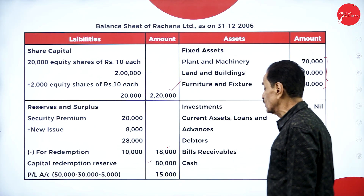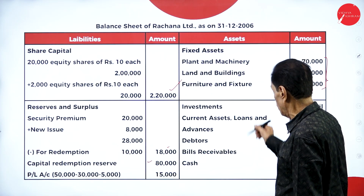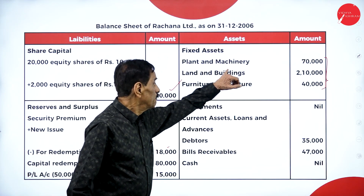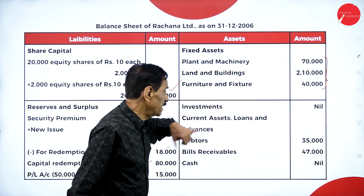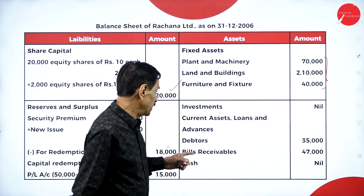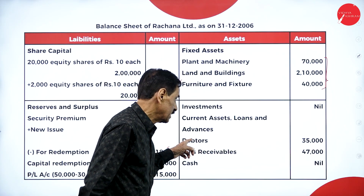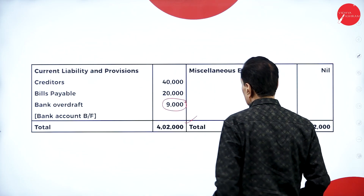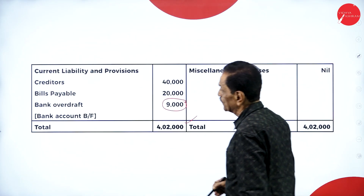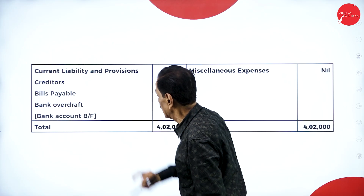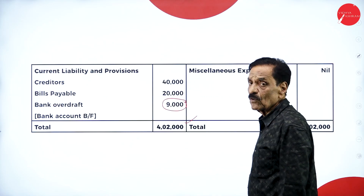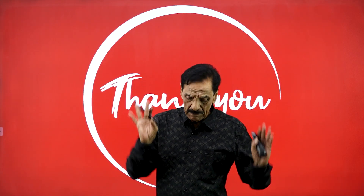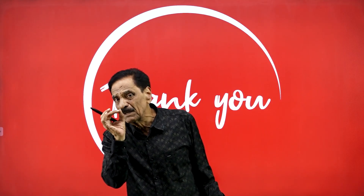Existing P&L fifty thousand, created CRR thirty thousand, loss on sale of investment five thousand — balance is fifteen thousand. Fixed assets: machinery, building, furniture. No investment. Current assets and advances: debtors. No cash at bank because we have taken the bank overdraft. No miscellaneous expenses. Liabilities: bills payable and bank overdraft. The balance sheet will tally for four lakh two thousand.